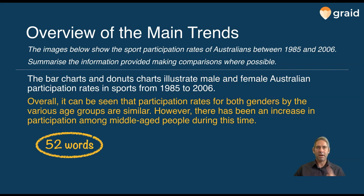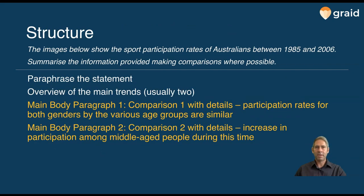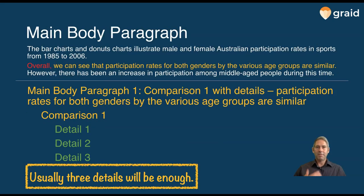There are 52 words with our paraphrasing of the statement and our overview, so that leaves us 100 words for our main body paragraphs. With the main body paragraphs, they're going to cover the details. Comparison one will focus on participation rates for both genders across various age groups being similar. Comparison two will cover the increase in participation among middle-aged people during this time. Start each paragraph by reiterating the comparison mentioned in the overview, then three details is usually enough — probably more than enough — to give you 150 words.